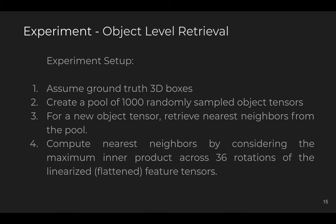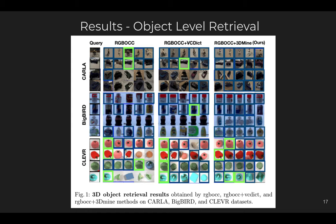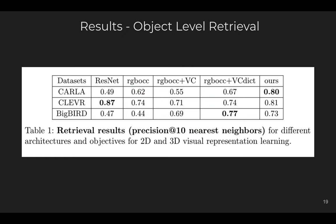Now I'll go through the experiments. The first is object-level retrieval, where we assume ground-truth 3D bounding boxes, create a pool of 1000 randomly sampled object tensors, and for any new object retrieve the nearest neighbor by checking across all 36 rotations along the vertical axis. We compare several baselines and show qualitative results. Blue and green patches indicate correct retrieval; no patches indicate incorrect retrieval. Our approach achieves quite good retrievals on the Replica dataset, with quantitative results shown for CLEVR, CARLA, and BigBird.